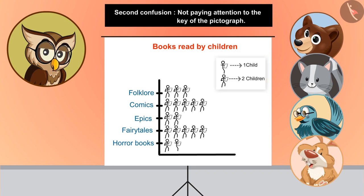Here, each stickman depicts 2 children. So 5 pictures will depict 10 children. So by making such keys, we can easily show data with fewer pictures in the pictograph.